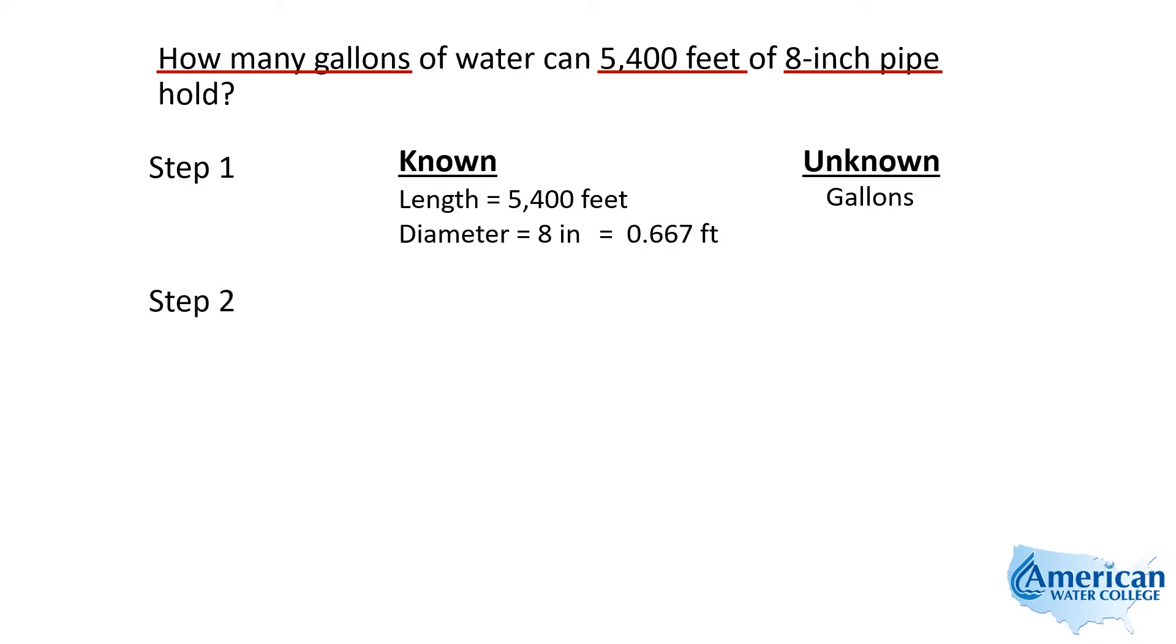Step two has us pick a formula. Well, the formula for volume in gallons is 0.785 times the diameter times the diameter. So this is getting the area, the cross-sectional area of the pipe times the length.